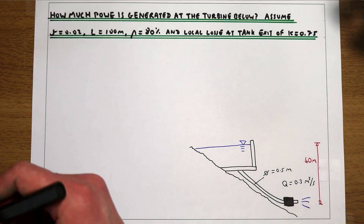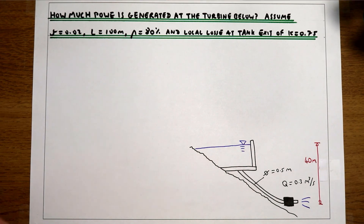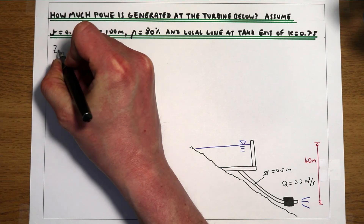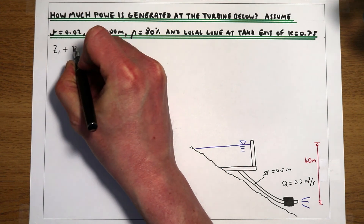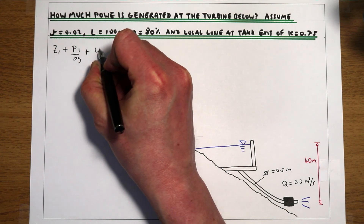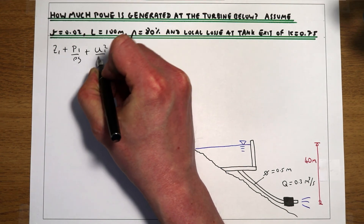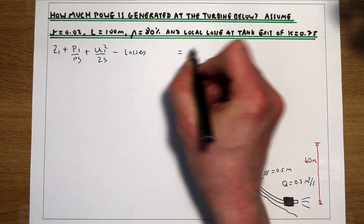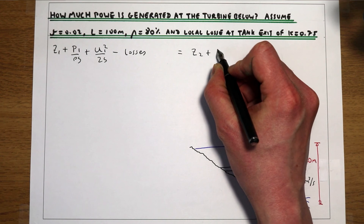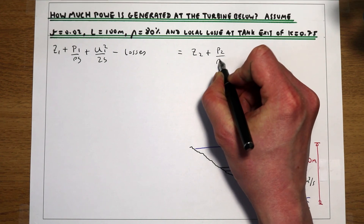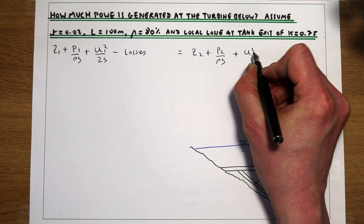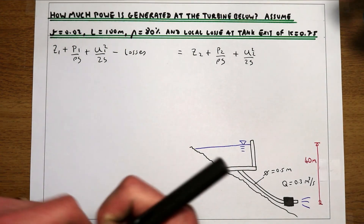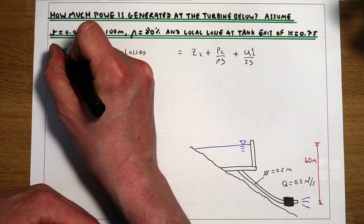The place we're going to start is with Bernoulli's equation. We know that the energy at point 1 — the elevation head at point 1, plus the pressure head at point 1, plus the velocity head at point 1, minus the losses in the system — equals the final energy at point 2: the elevation at 2 plus the pressure head at 2 plus the velocity head at 2. That is our normal form of Bernoulli's equation.